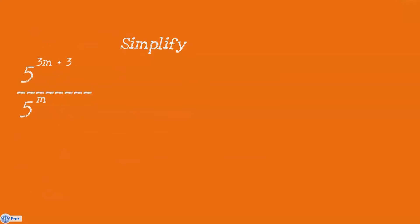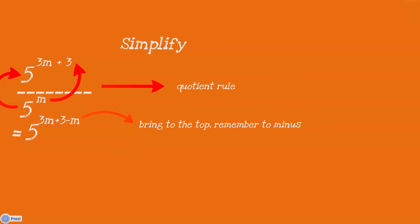The next question. Let us simplify a question with multiple powers. Given 5 to the power 3m plus 3 over 5 to the power m. The first thing to note is that the base is the same, so we apply the quotient rule and bring 5^m to the top. We end up with 5 to the power 3m plus 3 minus m. Don't forget to subtract your exponents. We simplify further by combining like terms, giving us 5 to the power 2m plus 3.